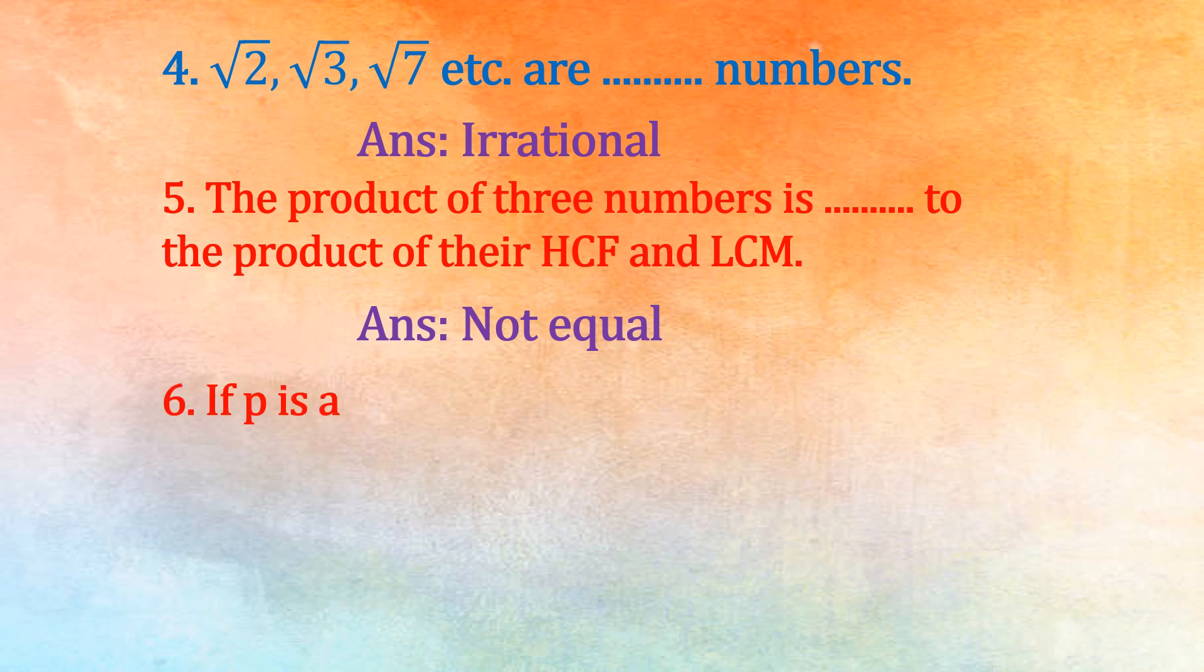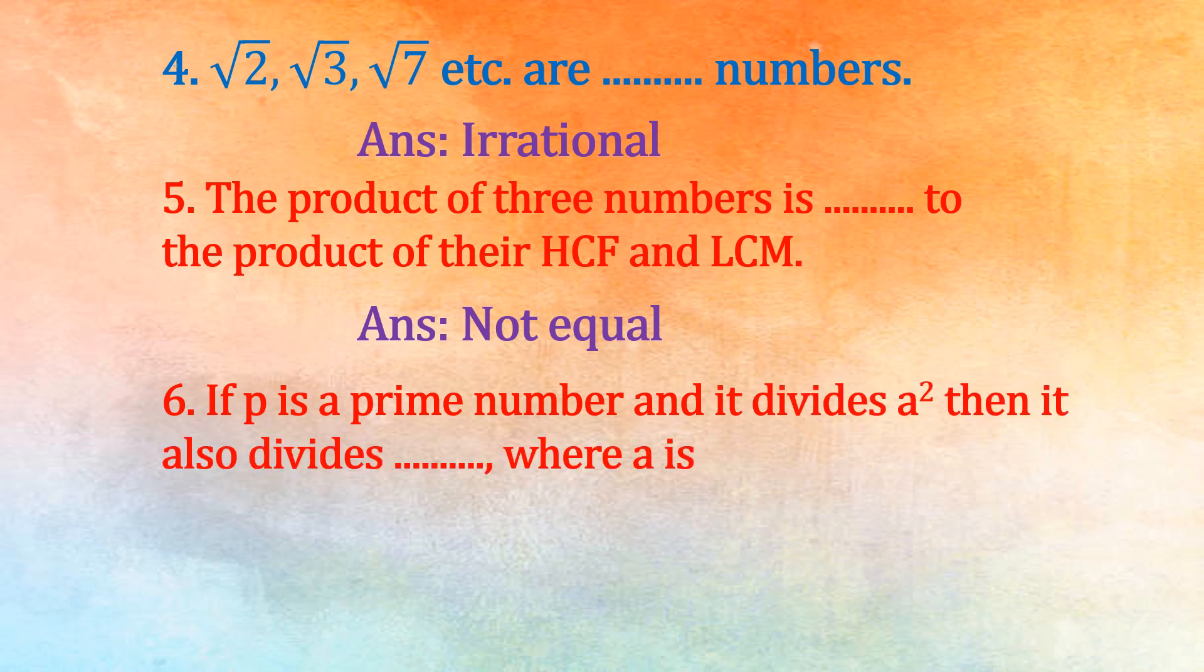6th one: if P is a prime number and it divides A square, then it also divides dash, where A is a positive integer. Answer: A.